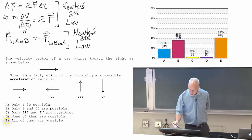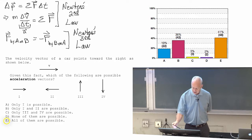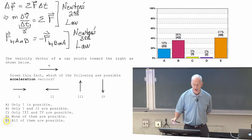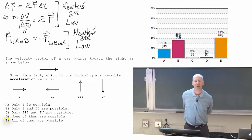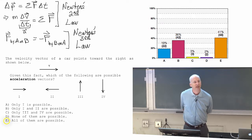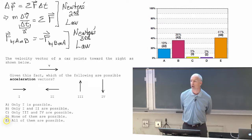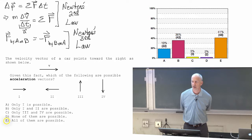If the acceleration vector — and so the change in velocity — is to the right, and the object is moving to the right with its velocity vector changing to the right, how would you describe that? Speeding up.